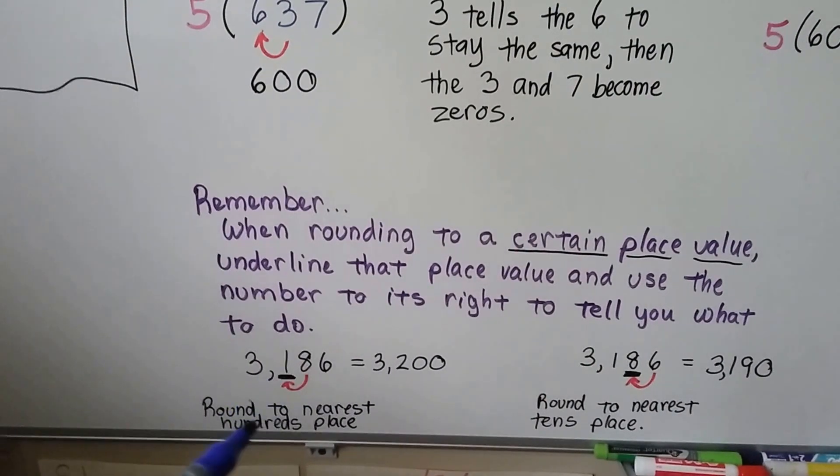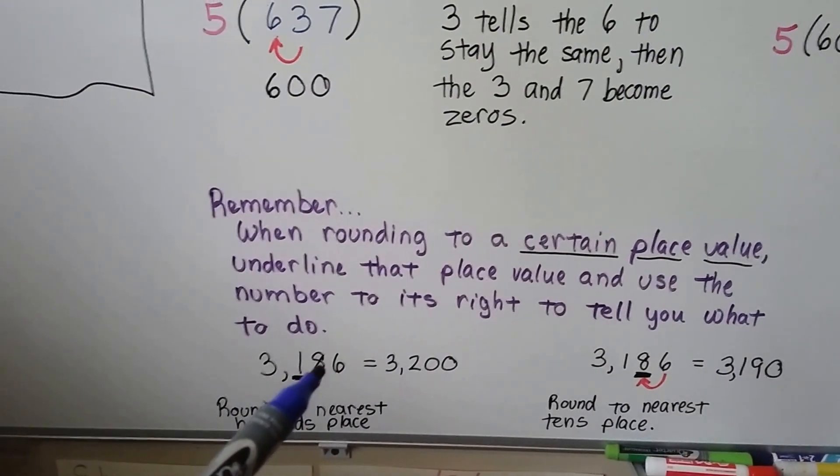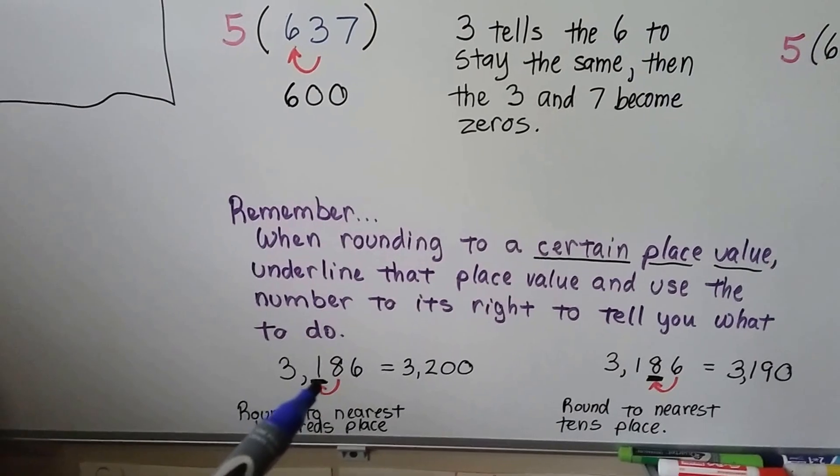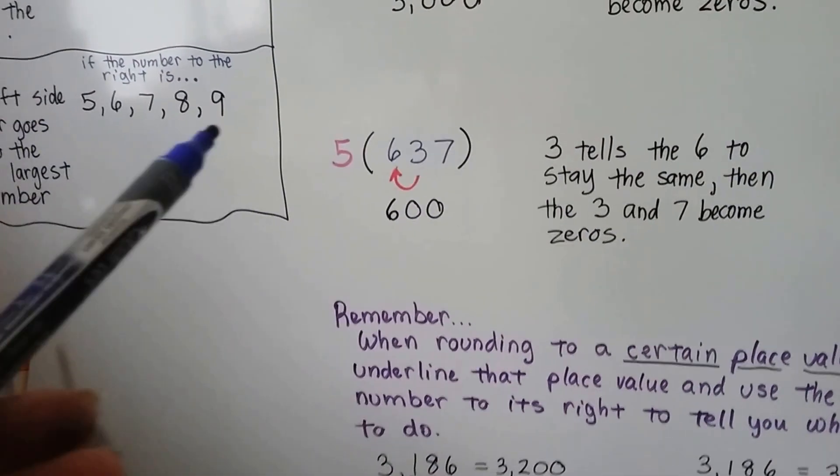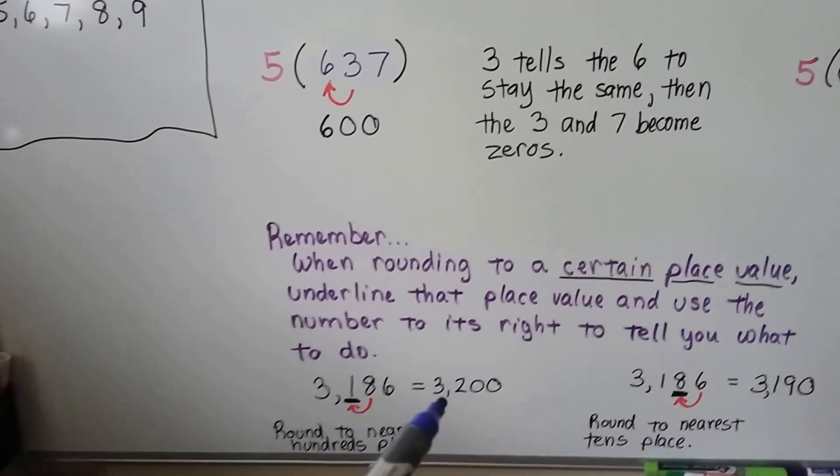underline that hundreds place so that we know what we're rounding. Then take a look at the 1 to the right of it. That 8 tells the 1 to go up. If it's a 5, 6, 7, or 8, it tells it to go up to the next largest number. So that means we've got 3,200.